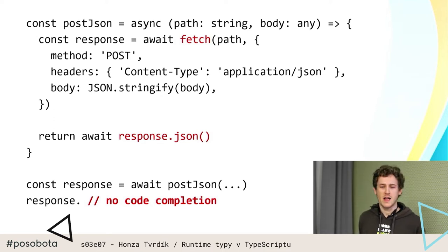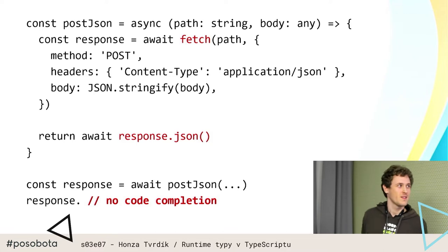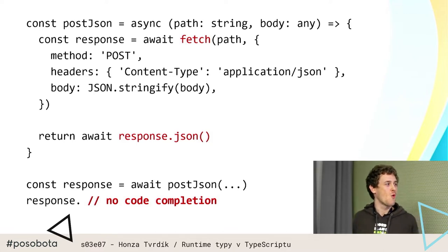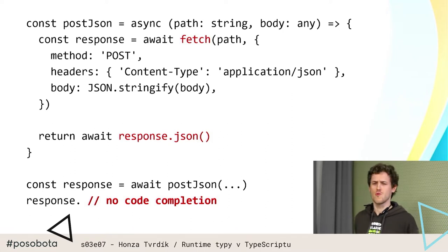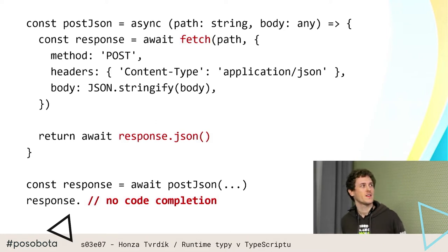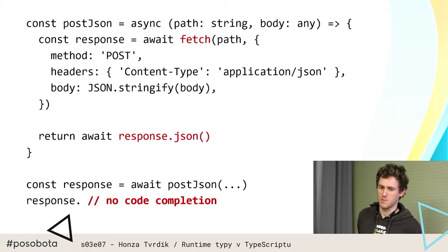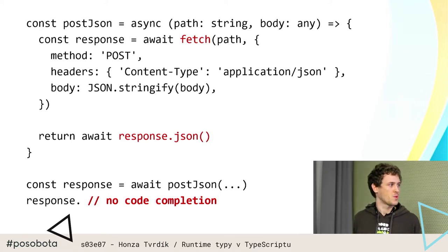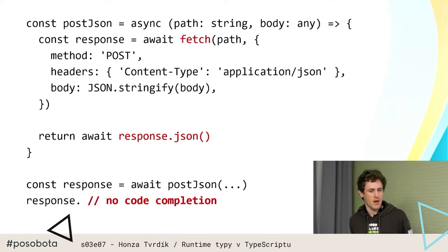Teď si podíváme na klasický příklad, jak si lidi dostanou do situace, co vypadá OK, ale actually je úplně špatně. Máme tady funkci postJson, což je helper funkce, co jsme si napsali — dělá fetch, nastaví metodu, content type, a pošle jsonový body, pak vrátí jsonovou response. Uděláme si nějaký API call, a problém je samozřejmě, čeho si lidi hned všimnou, že jim to nenapovídá.